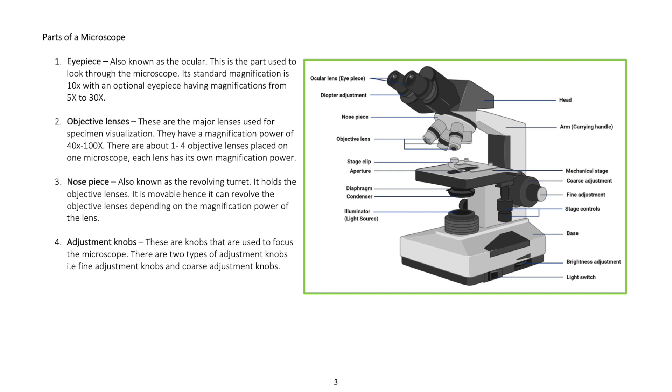The nose piece, also known as the revolving turret, holds the objective lenses. It is movable, hence it can revolve the objective lenses depending on the magnification power of the lens.